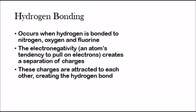Hydrogen bonding occurs when hydrogen is covalently bonded to either nitrogen, oxygen, or fluorine. What happens is that the nitrogen, oxygen, or fluorine — depending on what the hydrogen is bonded to — pulls on the electrons within the covalent bond, and that creates a separation of charges. Because of this separation of charges, these charges are attracted to each other, and that creates a hydrogen bond.